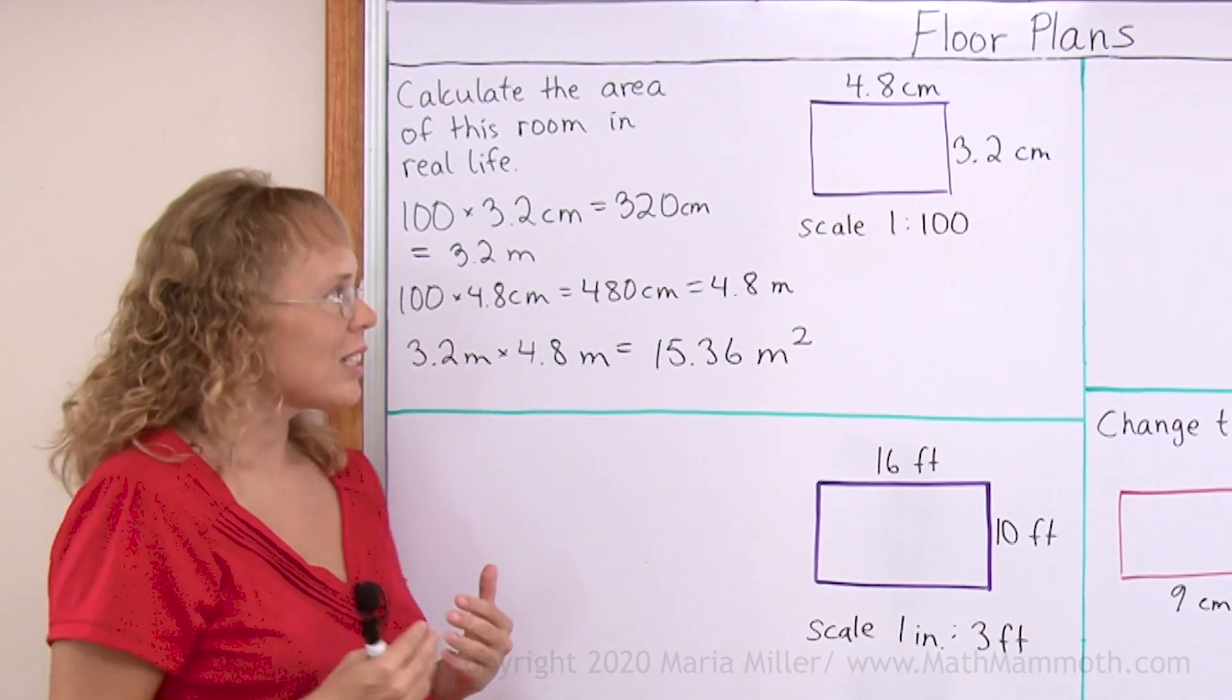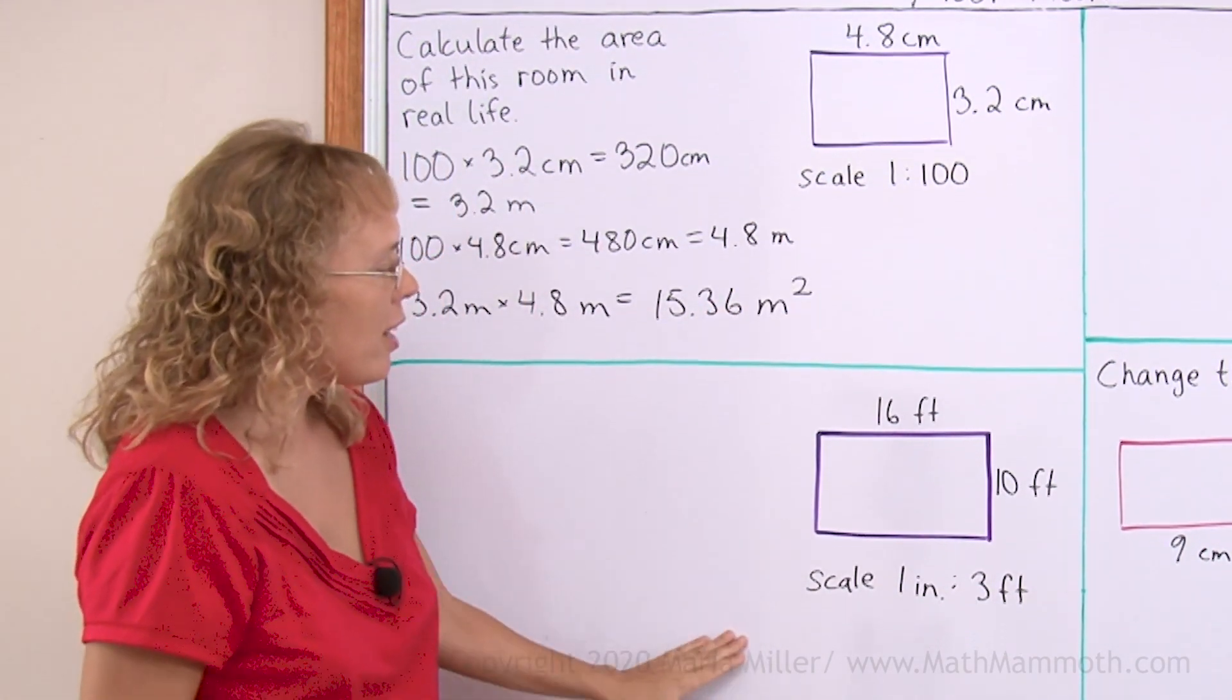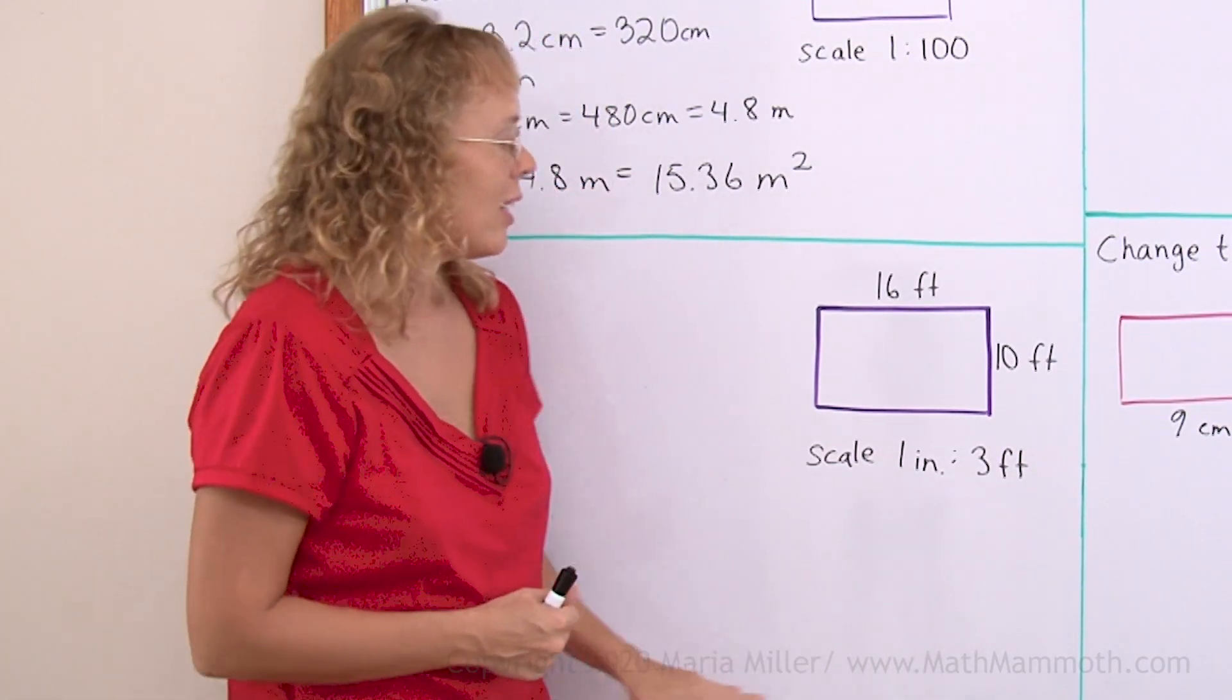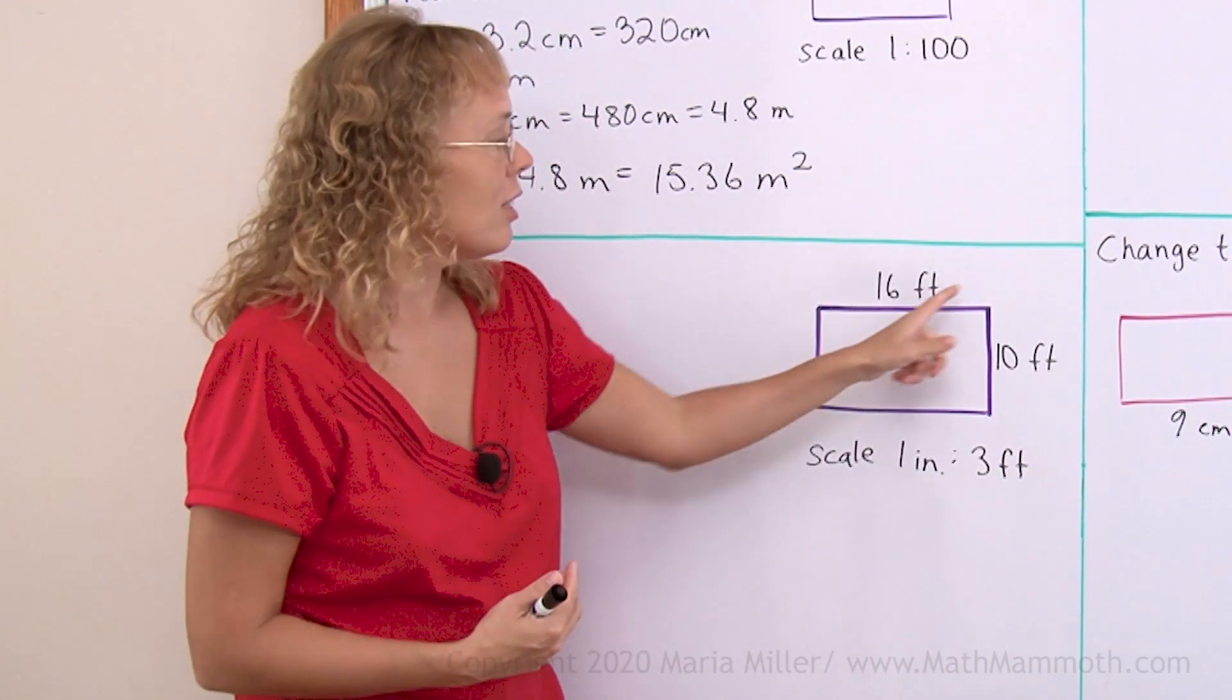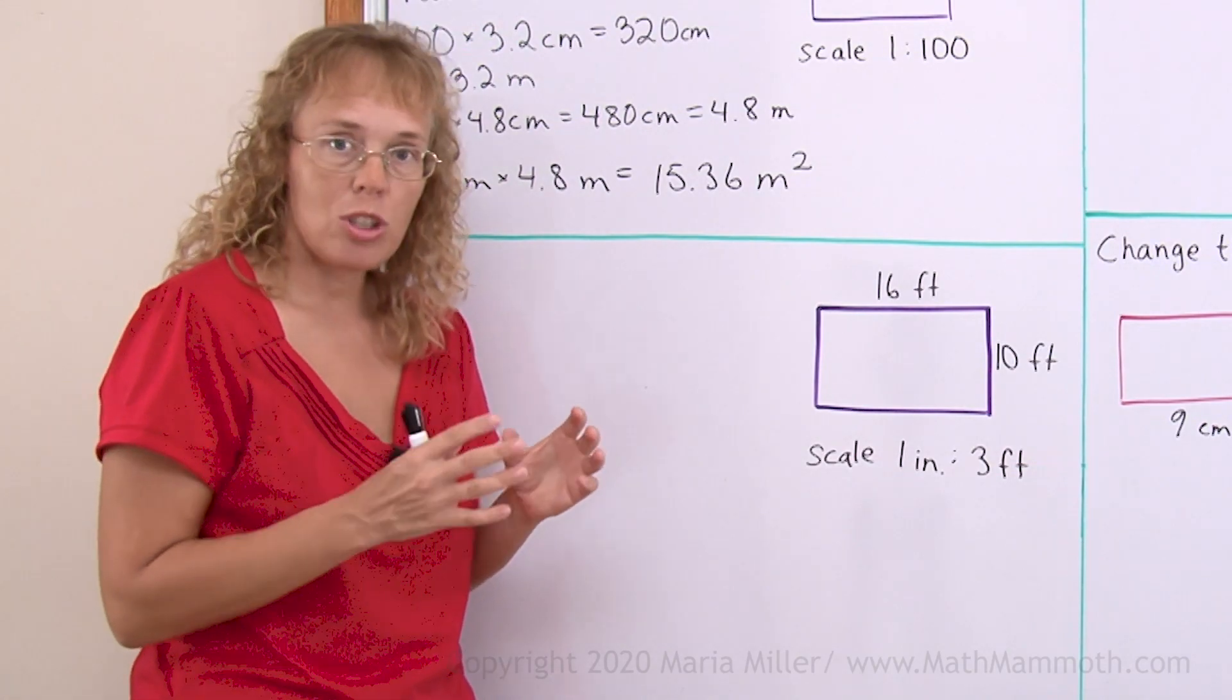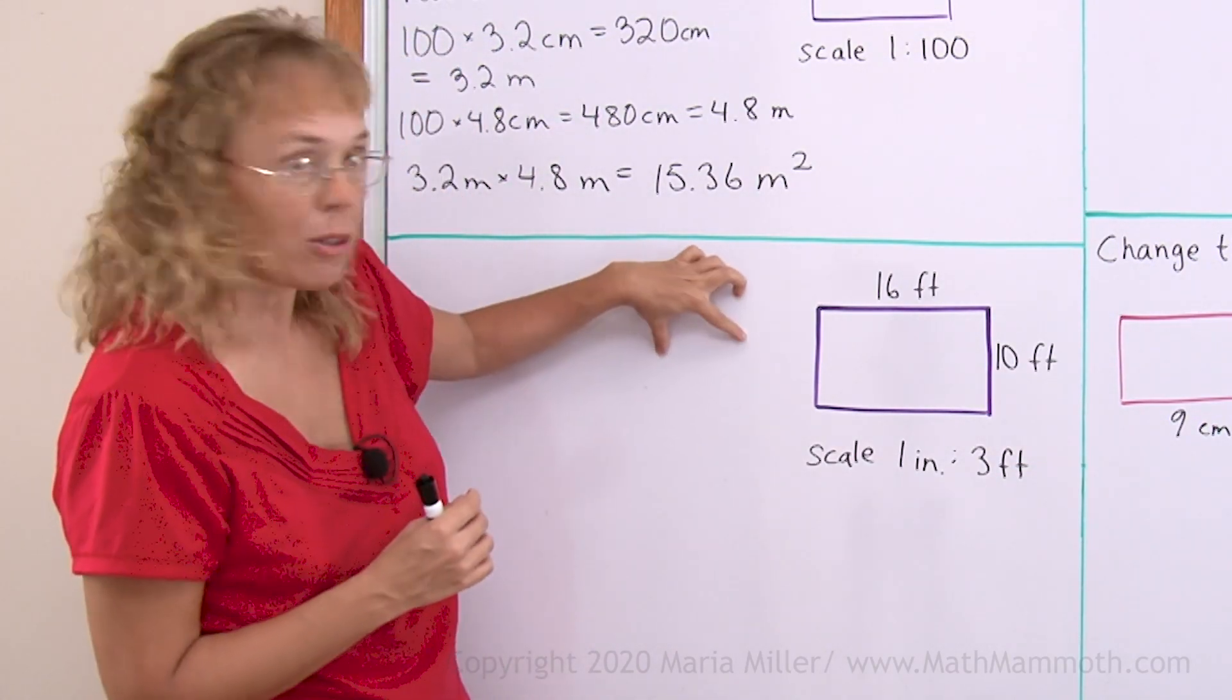So this was a pretty simple problem because the scale was easy, 1 to 100. Over here we have a scale of 1 inch to 3 feet. And this is now the room in reality because the measurements are in feet. Our task is to calculate if it was drawn on a floor plan how many inches will this room be on paper.